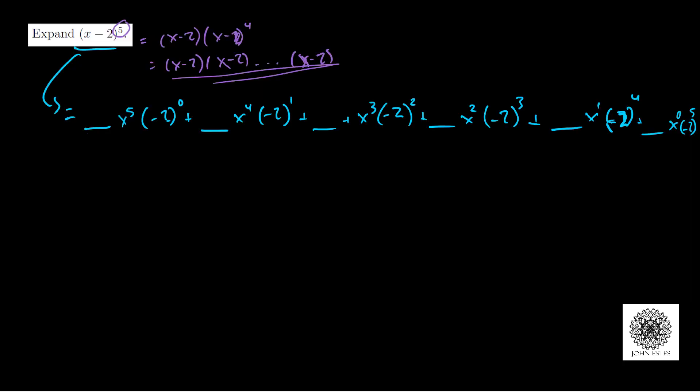Cleaning this up a little bit: that's 1 times x to the fifth times (-2) to the zero power which is 1, so we have x to the fifth. Then we have 5 times (-2) to the first power which is just -2, times x to the fourth.